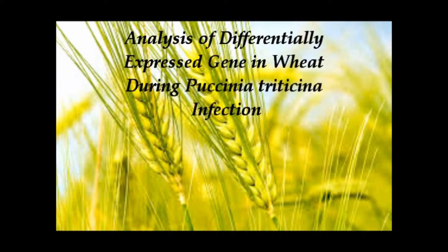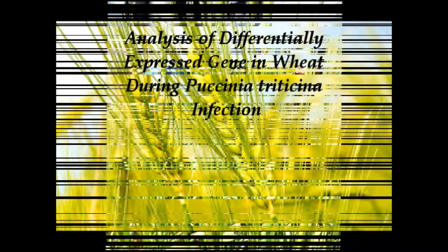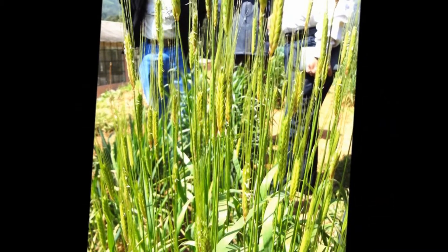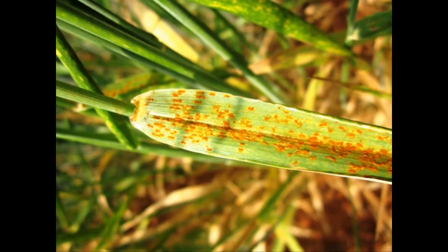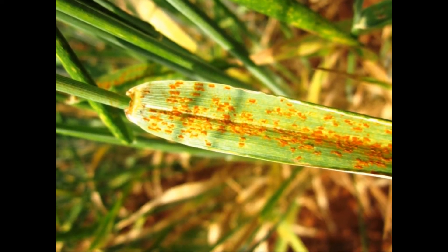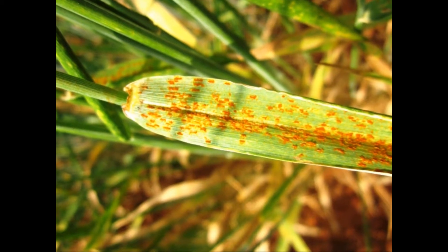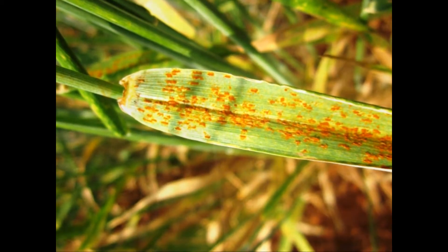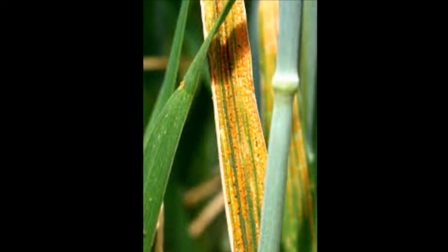Analysis of Differentially Expressed Genes in Wheat During Puccinia triticina Infection. Wheat is the second major food crop in the world, belongs to the family Poaceae, originated from Southwest Asia. Wheat is mainly affected by rust diseases caused by fungal pathogens. There are three types of rust: black rust or stem rust, yellow rust or stripe rust, and brown rust or leaf rust.